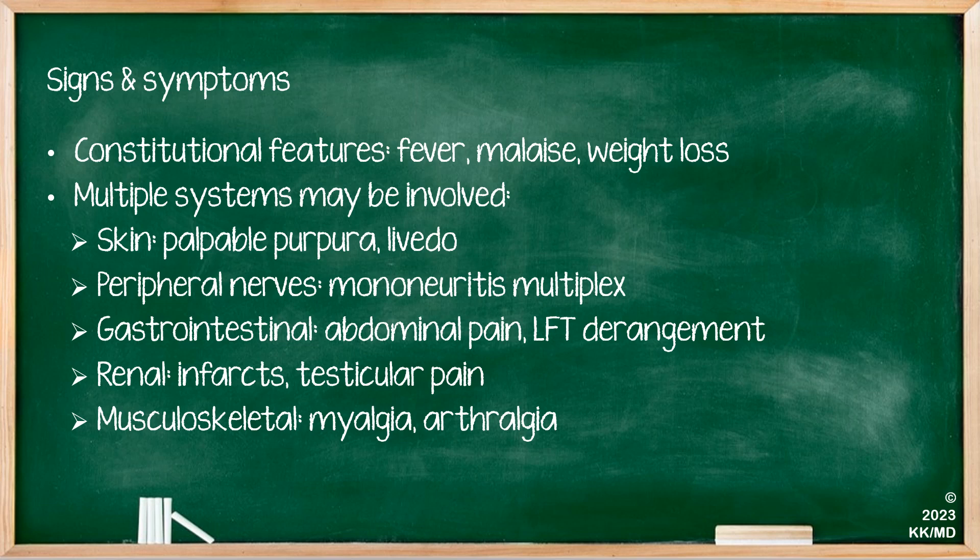Signs and symptoms of PAN are really quite varied as it is a multisystemic disease. You do get constitutional symptoms and features such as fever, malaise, and weight loss. Some of the most commonly affected organs or systems include skin, where you would be particularly looking for any palpable purpura or any livedo reticularis. It can also affect the peripheral nerves, and one of the key features would be to try to pick up any potential evidence of mononeuritis multiplex.